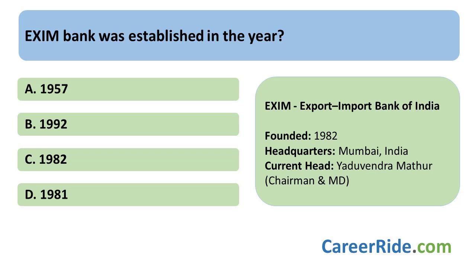The next question: Exim Bank was established in which year? Exim stands for Export Import Bank of India. It is the premier export finance institute in India. It was established in the year 1982, so the correct answer is C. The Exim Bank was established under the Export Import Bank of India Act of 1981 — the Act was passed in 1981 and the bank was established in 1982. Its headquarters are in Mumbai, and the current chairman and MD of Exim Bank is Yaduvendra Mathur. The functions of Exim Bank are segmented into groups: small and medium enterprises, export services, export marketing services, corporate banking, project finance or trade finance, and support services.